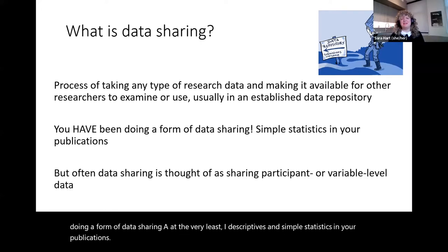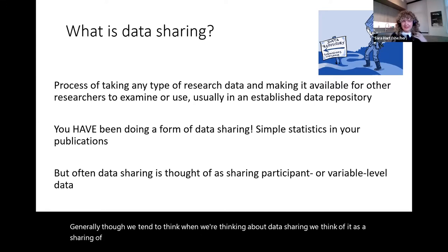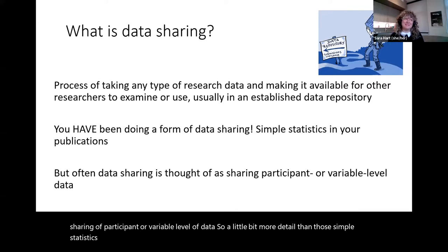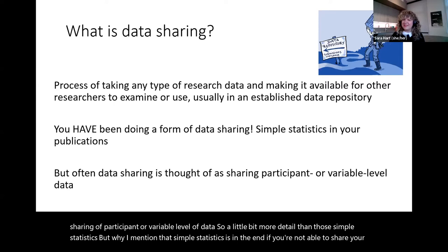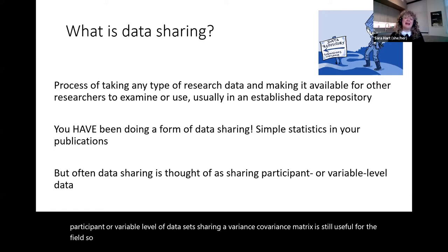Generally, when we think about data sharing, we think of sharing participant or variable level data — a bit more detail than simple statistics. But if you're not able to share full participant-level datasets, sharing a variance-covariance matrix is still useful for the field and can still be counted as data sharing.